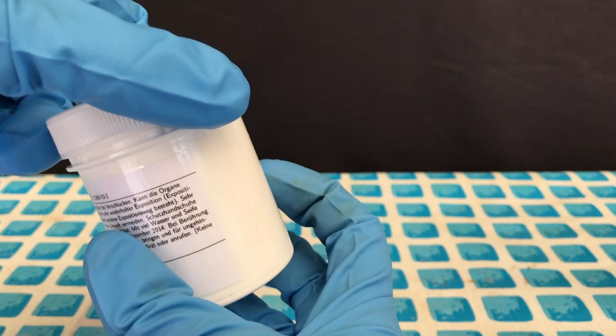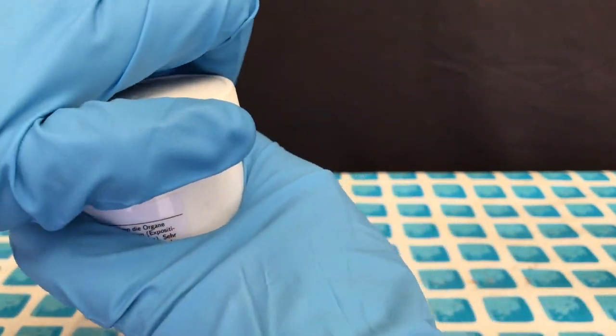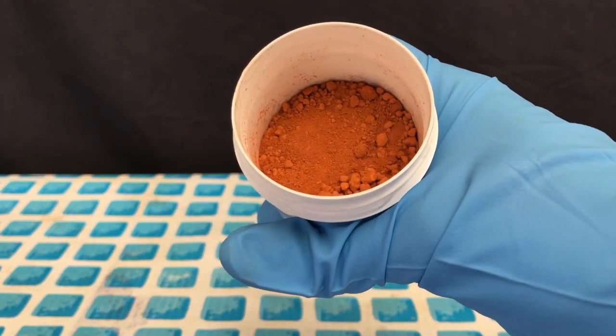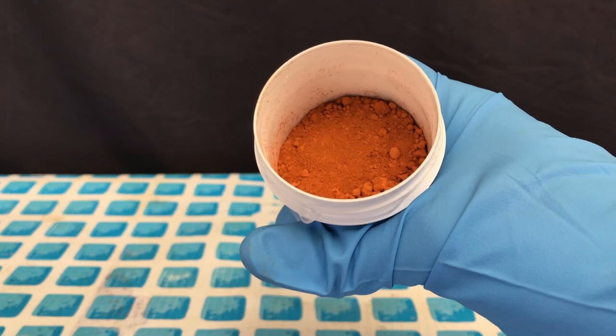And there you go. This is how you make mercury 2 oxide from mercuric sulfate. If you liked today's video, make sure to drop me a like, and if you don't want to miss out on further chemistry content like that, make sure to subscribe.